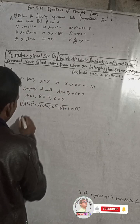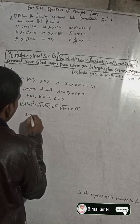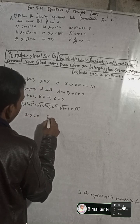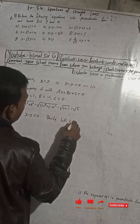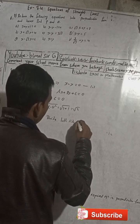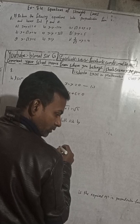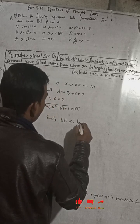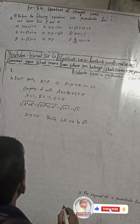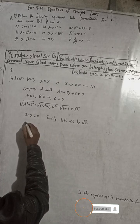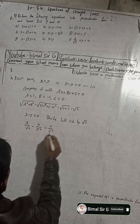Now in this equation, divide both sides by root 2. So dividing by root 2, this can be written as x by root 2 minus y by root 2 is equal to 0 divided by root 2.